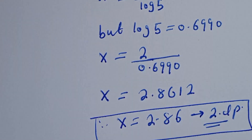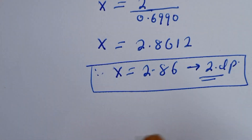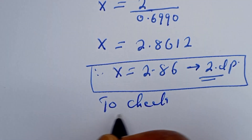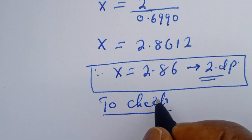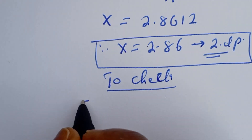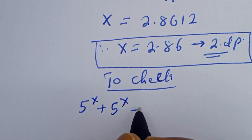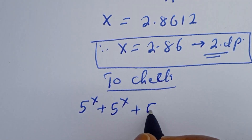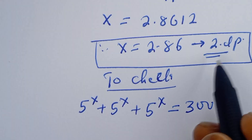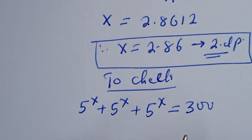Therefore s is equal to 2.86 to two decimal places — this is the final answer. Now we can check to confirm if this answer is right or wrong. To check, we substitute back into the given equation: 5 to the power of s plus 5 to the power of s plus 5 to the power of s is equal to 300, when s is equal to 2.86.